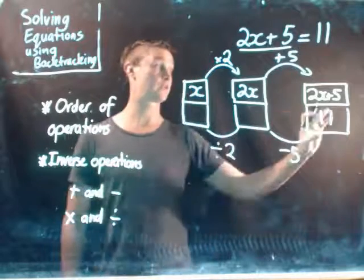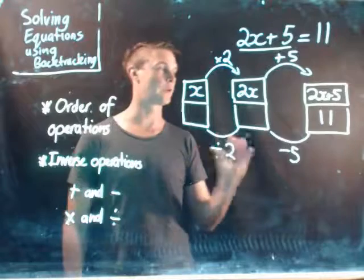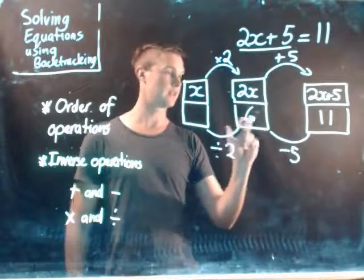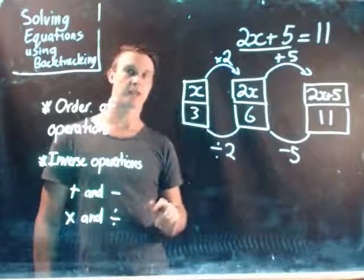So all we need to do now with backtracking is follow this step, and hopefully we should be able to get an answer here for what x is. So 11 minus 5, we know, equals 6. And then if I divide 6 by 2, I should get my answer of 3.